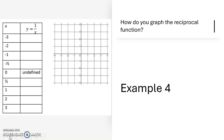The first thing we can do is graph the reciprocal function. We're going to use k equals 1, so it's going to be the most basic reciprocal function: x times y is equal to 1. For every x-coordinate, y will be the reciprocal.